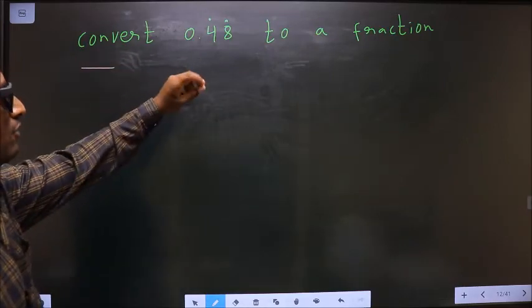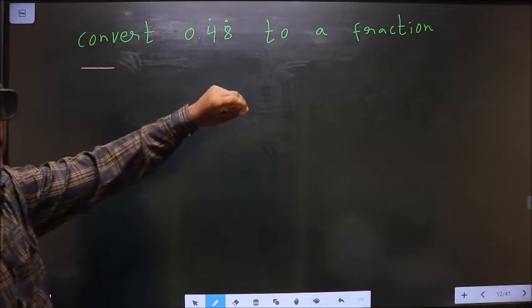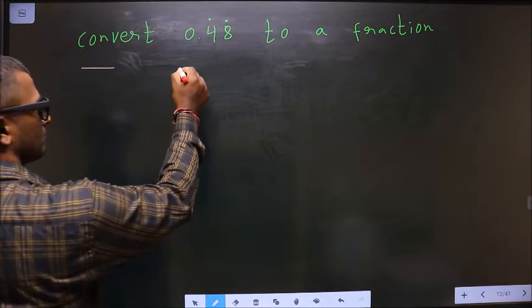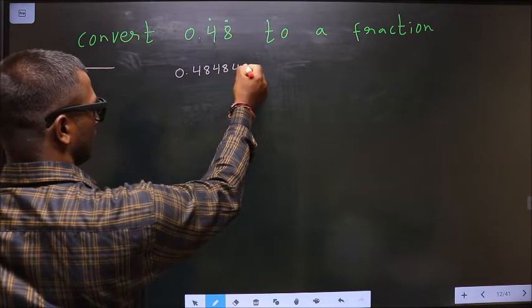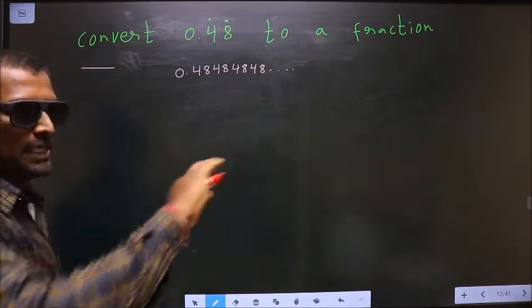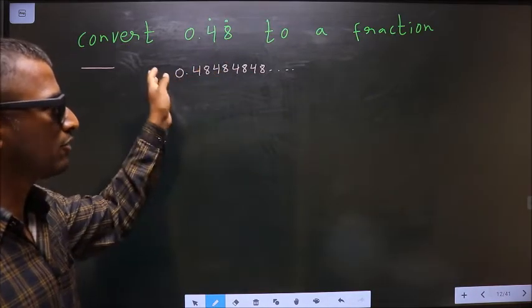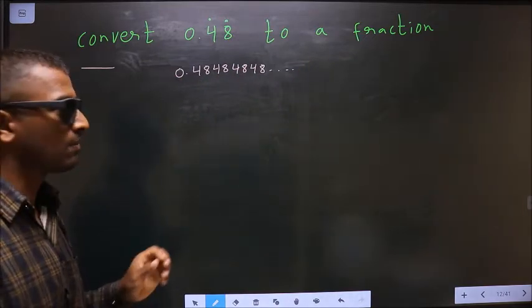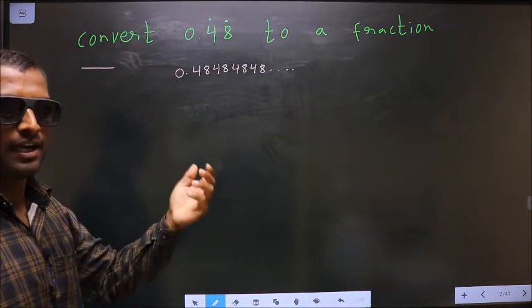Convert 0.48̄ to a fraction. The dot is on 4 and 8, which means 0.484848... goes on repeating. That is the meaning. Dot on 4 and 8 means 48 goes on repeating. Now I have to convert this to a fraction, and how do we do that?